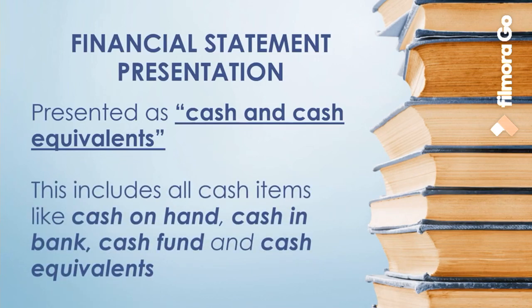Financial statement presentation: cash and cash equivalents are presented as one line item in the balance sheet. This includes all cash items like cash on hand, cash in bank, cash fund, and cash equivalents which have no restriction on use for current operations. However, details should be disclosed in the notes to financial statements.